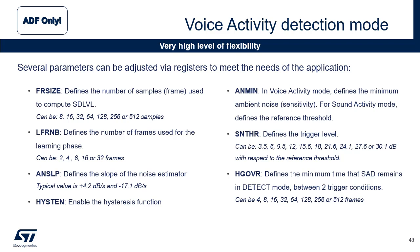SAD is very flexible and several parameters can be adjusted to meet the needs of the application. The frame size, called FR size, defines the number of samples used to compute SDLVL. The number of learning frames, called LFRNB, defines the number of frames used to compute the initial ambient noise level. The ambient noise level slope, called ANSLP, defines the slope of the ambient noise estimator during the monitor and detect states. The trigger level adjust, called SNTHR, defines the trigger level, which is used differently depending on the detection mode selected. The hangover, called HGOVR, defines the minimum time the SAD remains in detect mode between two trigger conditions. The sensitivity or level, called ANMIN: in voice activity detection mode it defines the minimum ambient noise; in sound activity detection mode it's used to adjust the threshold. It's also possible to have hysteresis on the threshold value with the HISTEN parameter.